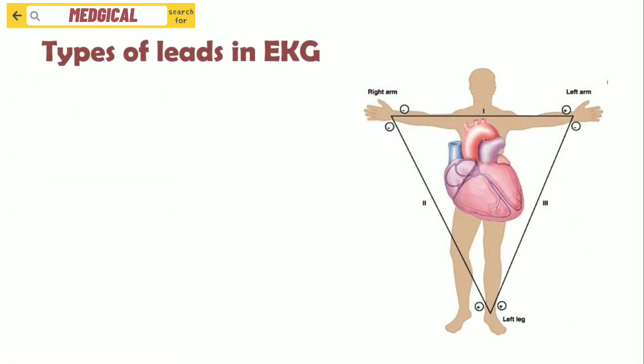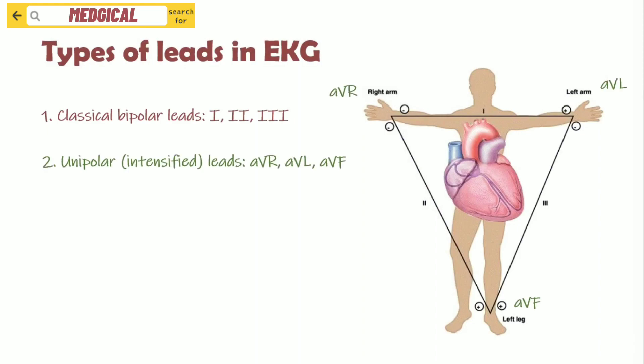There are three main types of leads in EKG: classical bipolar leads 1, 2, 3; unipolar intensified leads AVR, AVL, AVF; and precordial unipolar chest leads V1, V2, V3, V4, V5, and V6.